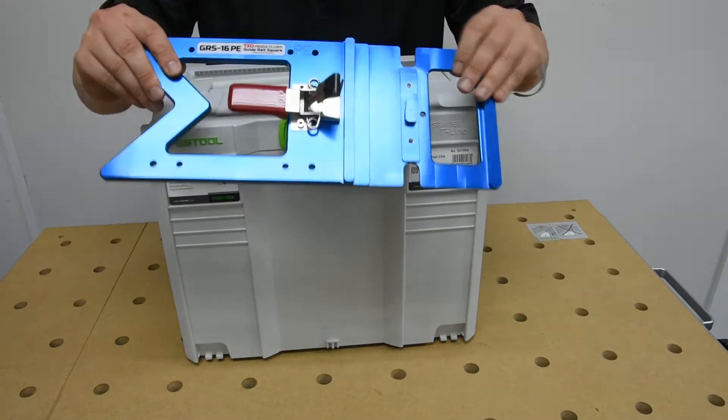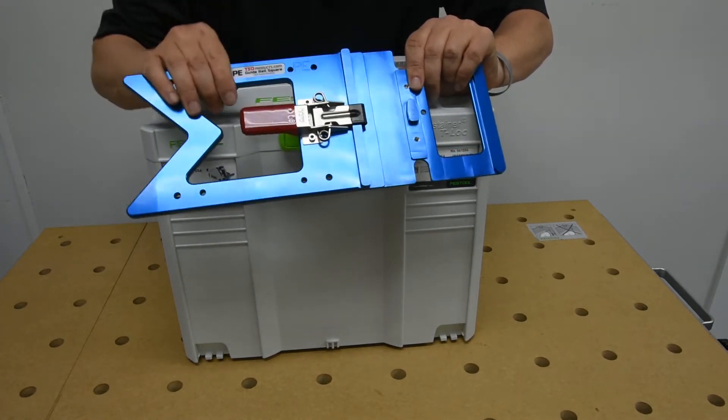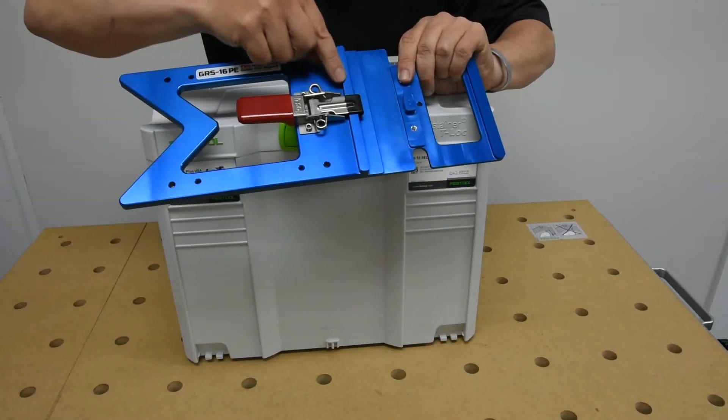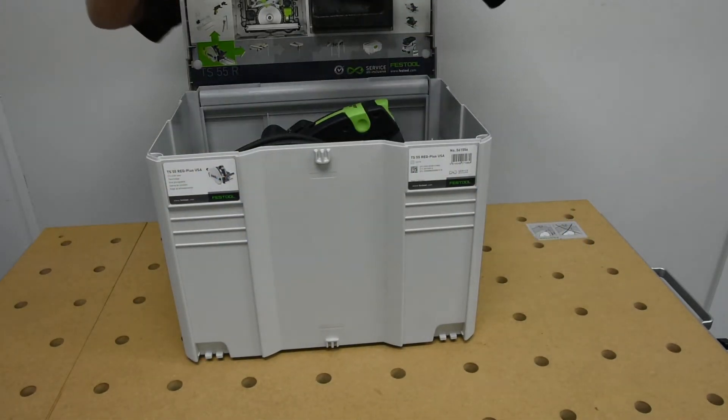The first thing you want to do is close the latch all the way and make sure that the black end engages on the reference edge right here. Now I'm going to open up the box and see the saw is in there.